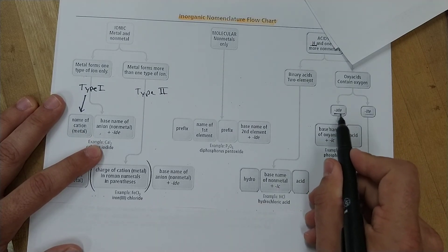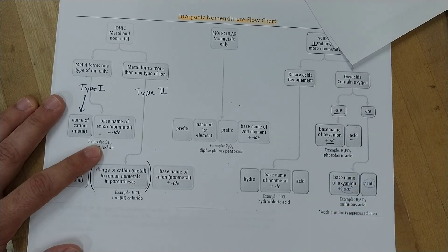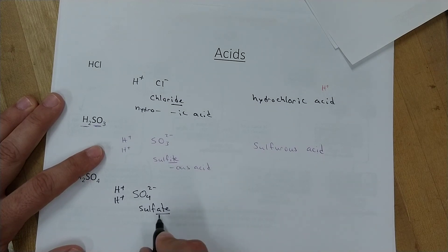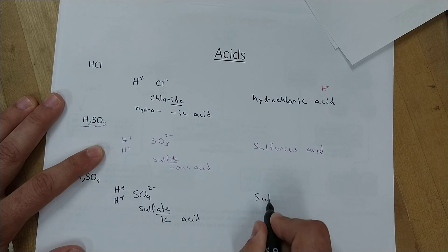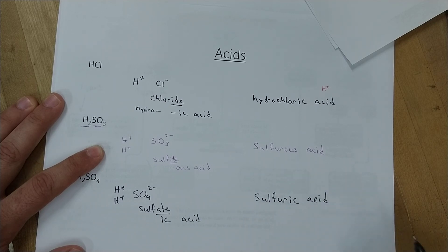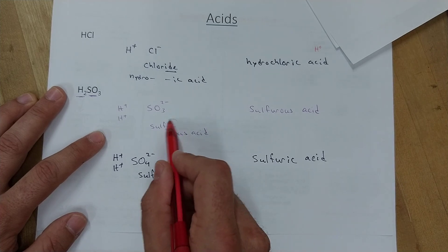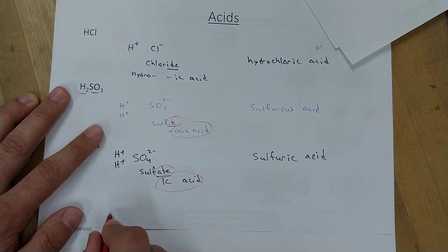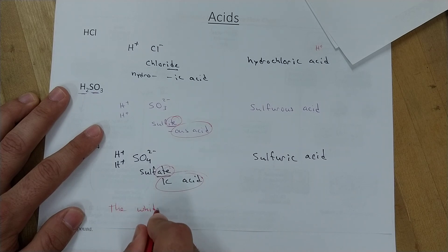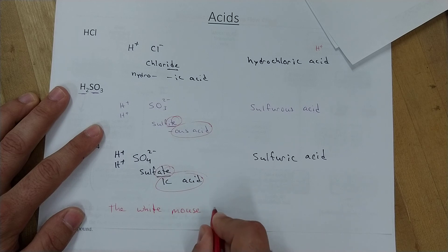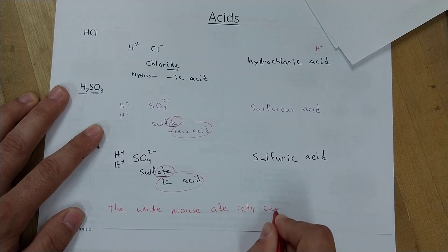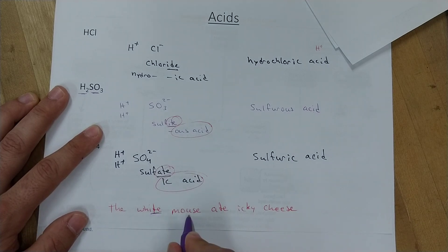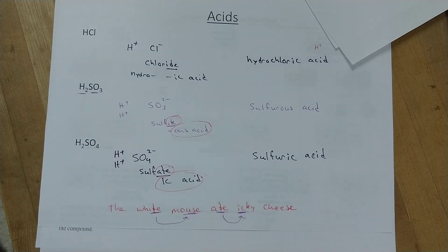To remember the relationship between -ite/-ous and -ate/-ic, we use the saying: 'The white mouse ate icky cheese.' So -ite goes with -ous acid, and -ate goes with -ic acid. It's a silly saying but it helps when you're nervous on a test.